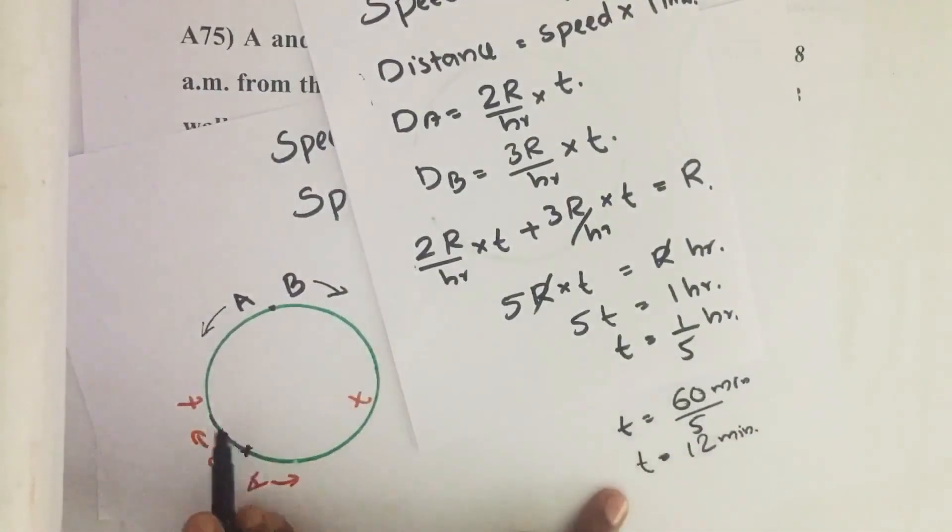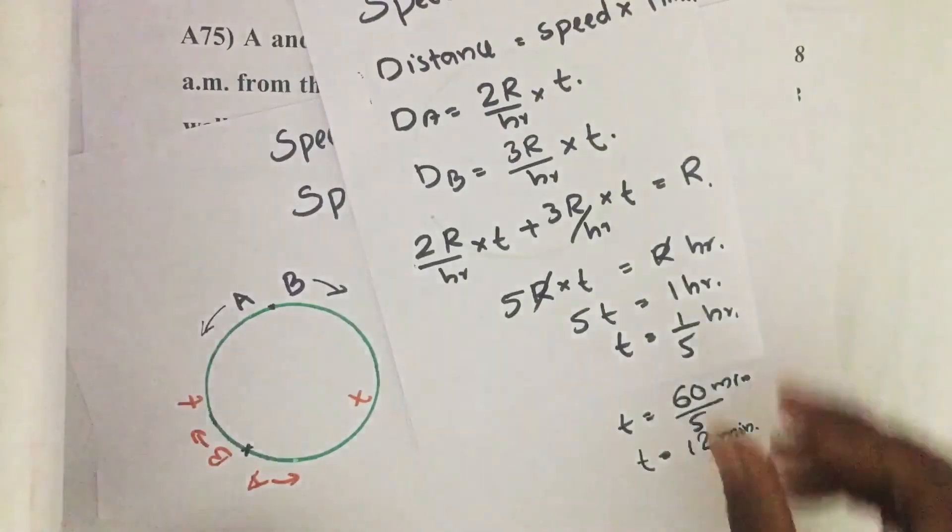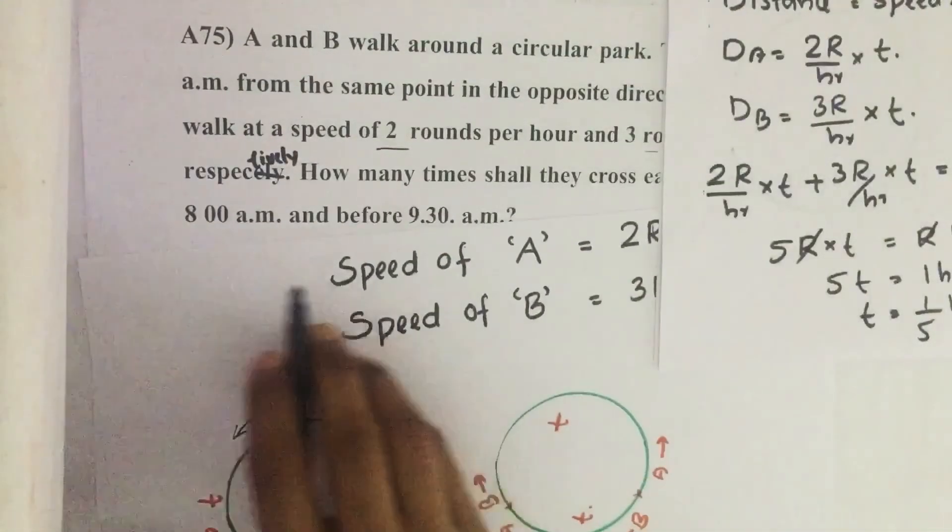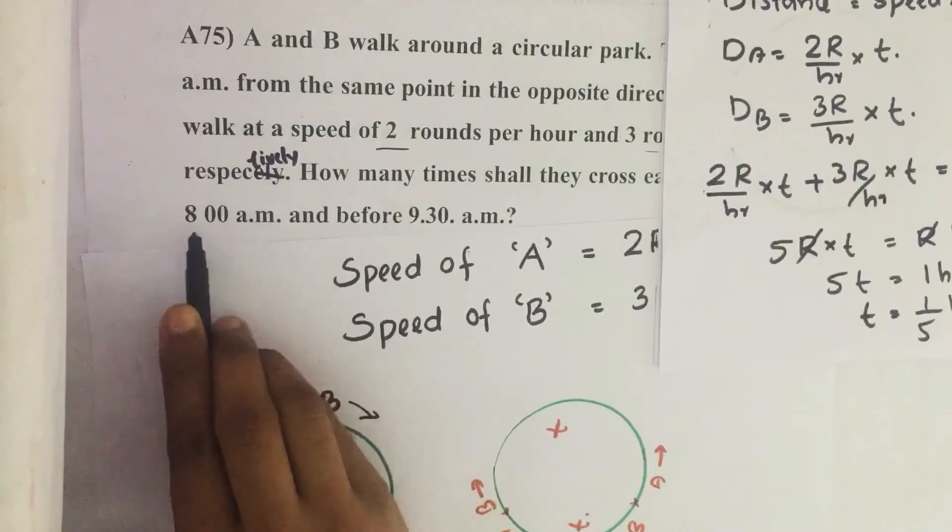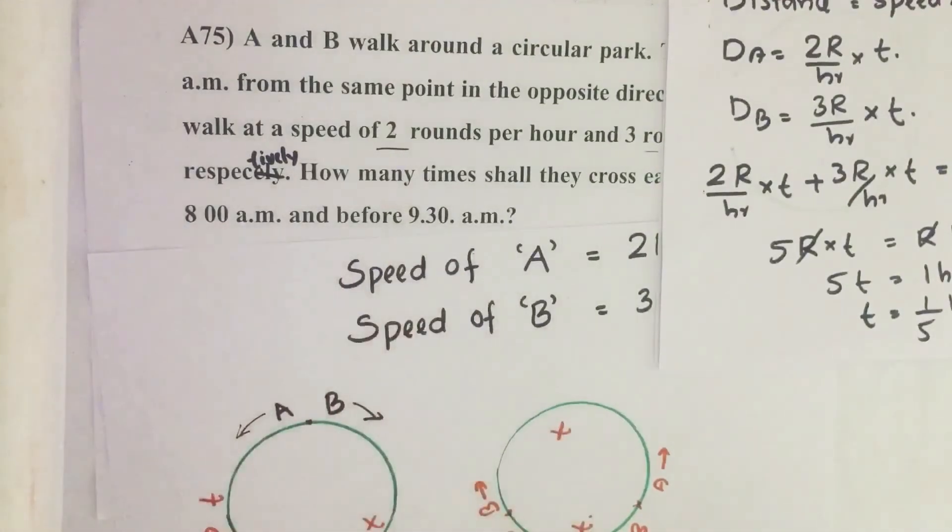So after each 12 minutes they will meet. Both A and B will meet. So how many 12 minutes are there in the time interval 8am to 9:30am?